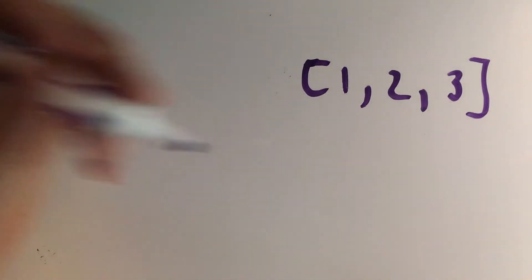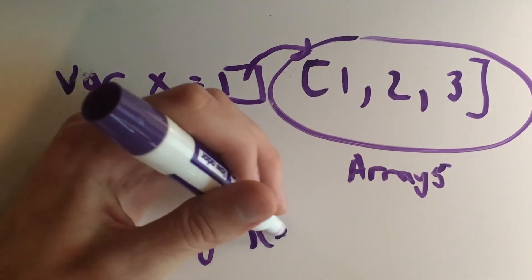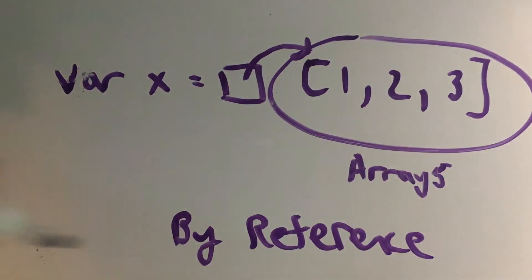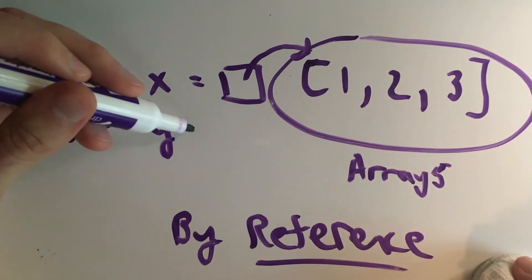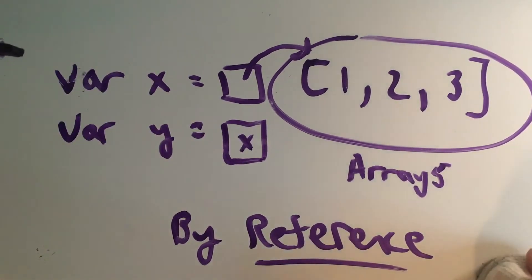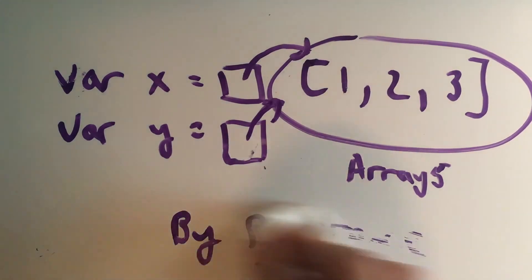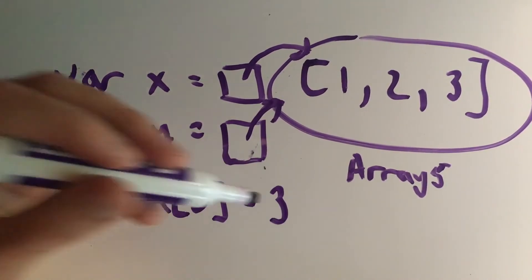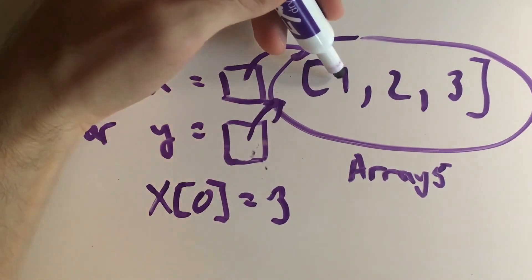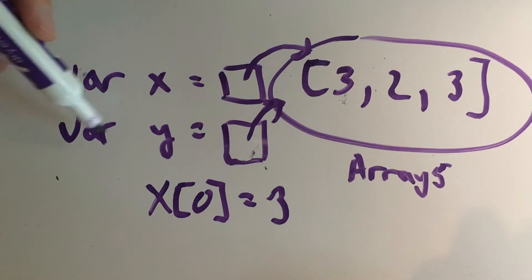This same pass by reference behavior happens with arrays as well as objects. We'll declare an array with the values 1, 2, 3 and set X equal to that array. When setting a variable to an array it's going to be by reference, not by value. Let's declare another variable called Y and set it equal to X — behind the scenes this points Y to the same array reference, so both X and Y now point to the same array. To demonstrate this, we'll set index 0 of the array equal to some other value, overwriting the 1 with a 3. Now both X and Y point to the same array, so index 0 of X is 3 and index 0 of Y is also 3.